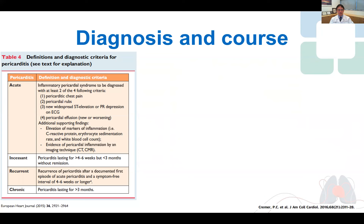In terms of the disease course: acute pericarditis, then incessant pericarditis, which is one to three months, chronic pericarditis, which is more than three months, and recurrent pericarditis, which is two or more episodes with a four to six-week period of symptom-free in between.